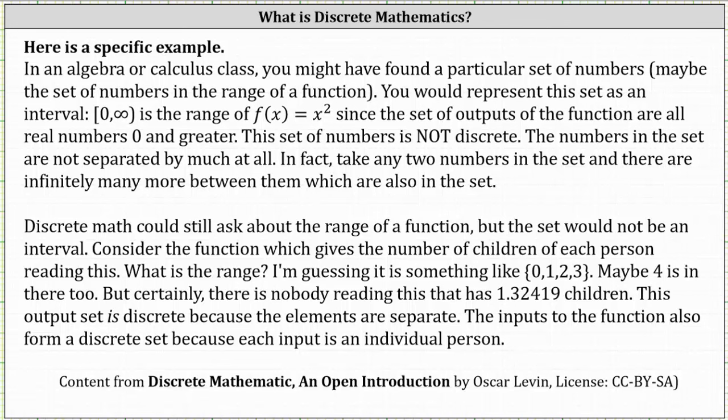Certainly, there is nobody reading this that has 1.32419 children. This output set is discrete because the elements are separate. The inputs to the function also form a discrete set because each input is an individual person. I hope you found this helpful.